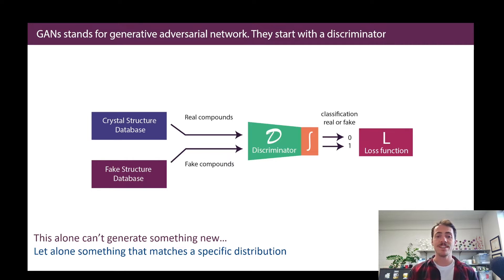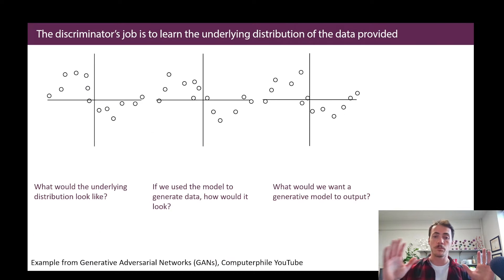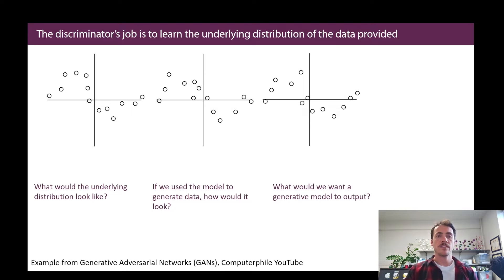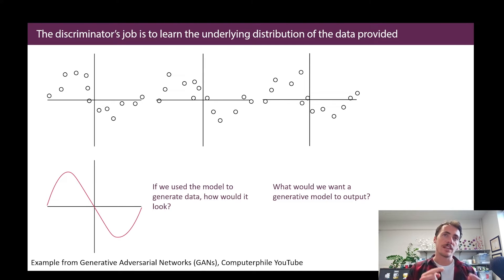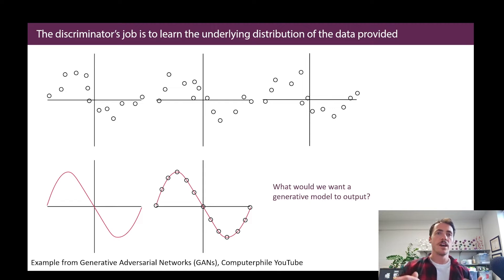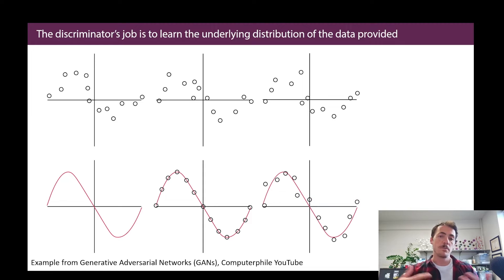But this is just a classifier — it isn't going to generate anything new. Instead, it tries to learn something about the underlying distribution from which the data is sampled. Consider these three different data samples: there's a sort of underlying sinusoidal pattern to all of them. What we're asking the classifier to do is figure out that underlying distribution, which might look like the red line on the bottom left. But if you used that learned distribution to generate new data points, they'd sit right on top of that line because the classifier doesn't know how to add variance or noise to make it look like a real sample.